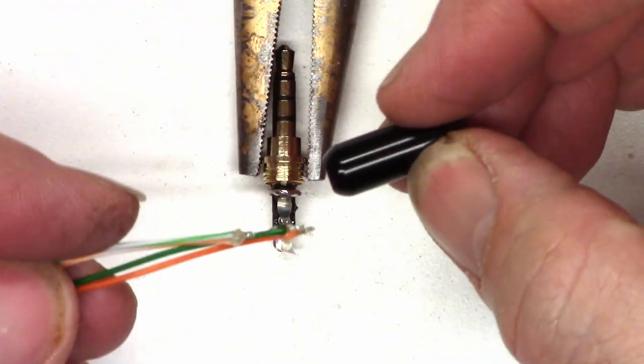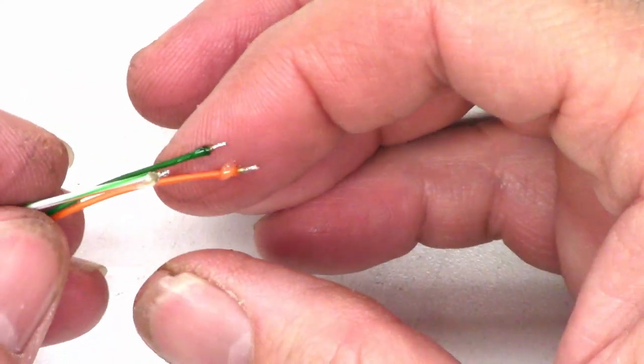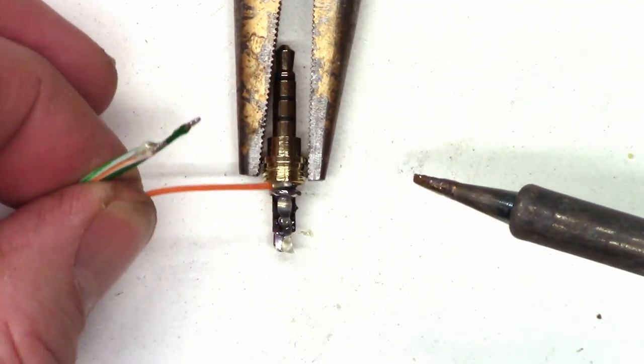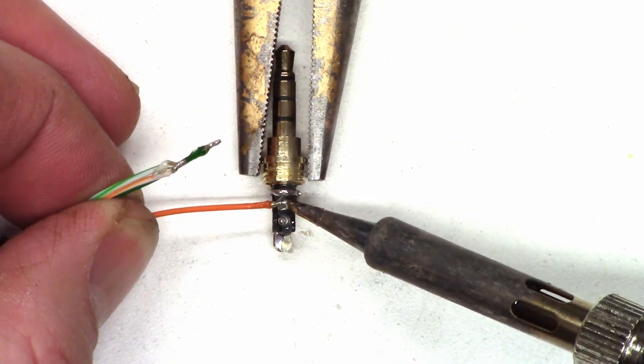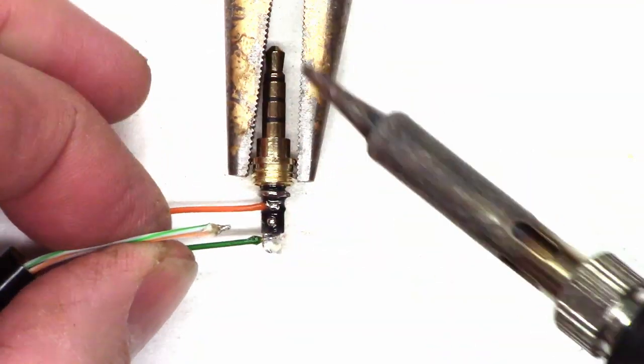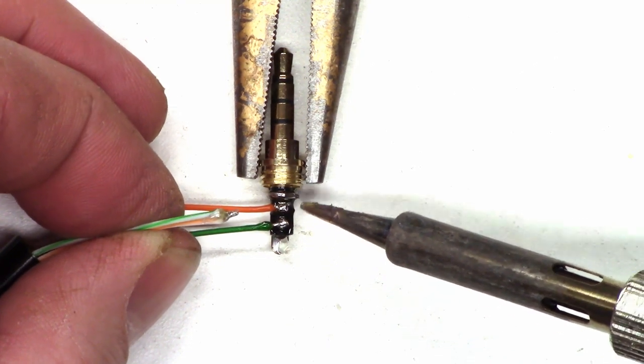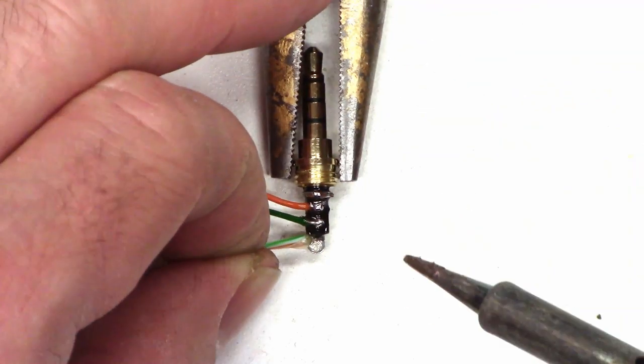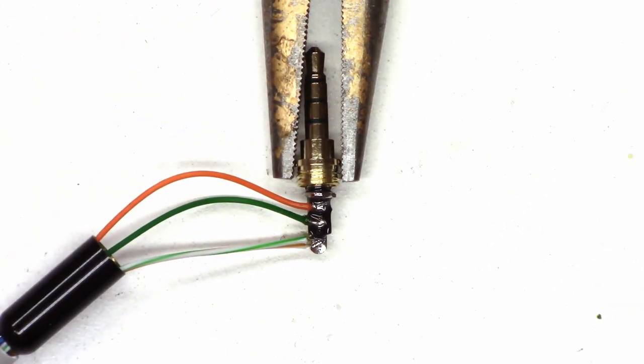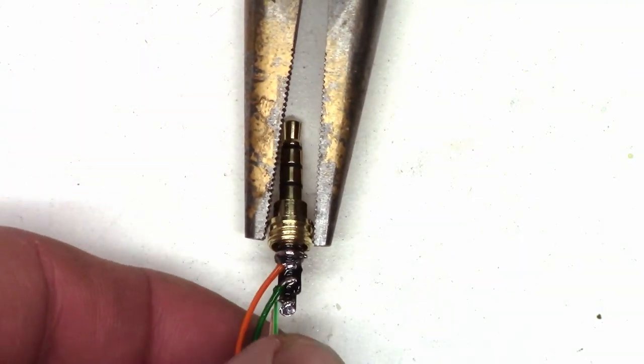So now make sure if you're going to do this that you don't forget to slip the cover back on the cable before you solder it. So I'm going to start and we're going to solder my orange lead which is the right channel which goes right here. And then I'm going to do my green which is the left channel. And then I will go ahead and add my shield. Just like that.